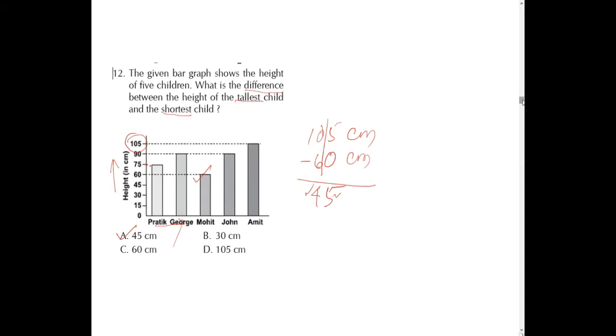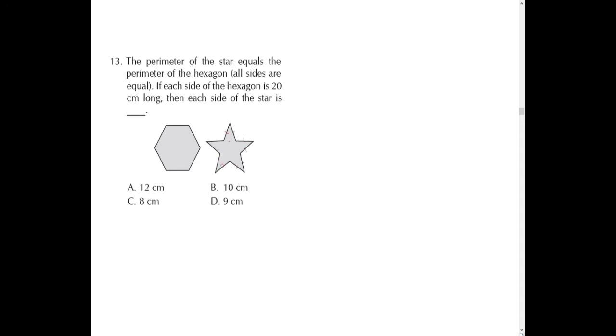Question number 13 asks for the perimeter of a star. Perimeter means the sum of all sides. The star has 2+2+2+2+2 = 10 sides. The perimeter of the star equals the perimeter of the hexagon. Here is the hexagon — all 6 sides are equal.